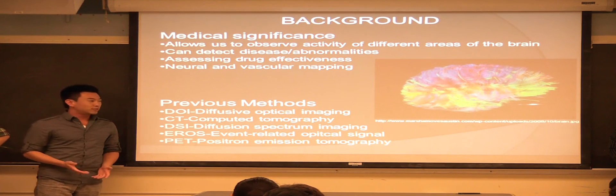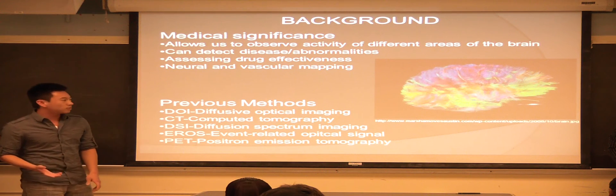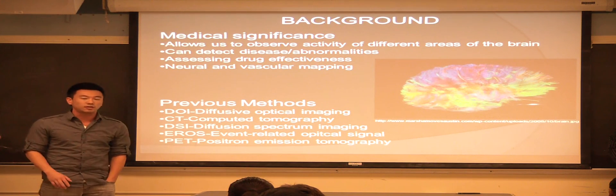There's many methods which can be used to image the brain. Each one has their own strong points depending on what you're trying to accomplish, but today we're going to be focusing on the fMRI and the MEG.